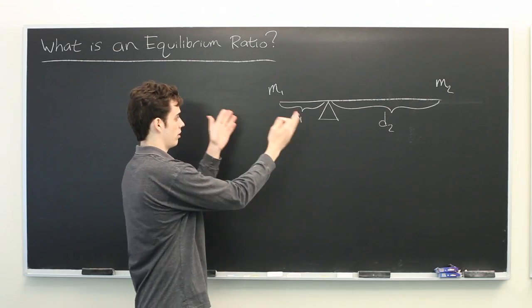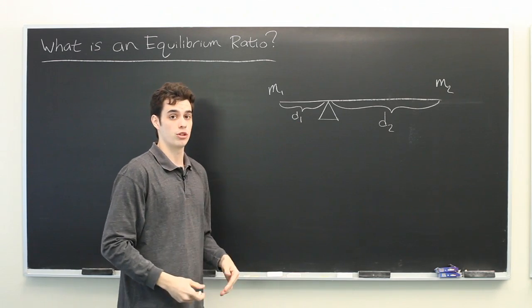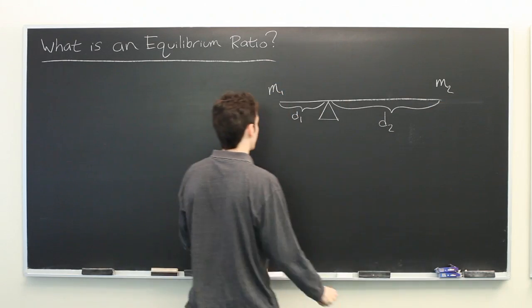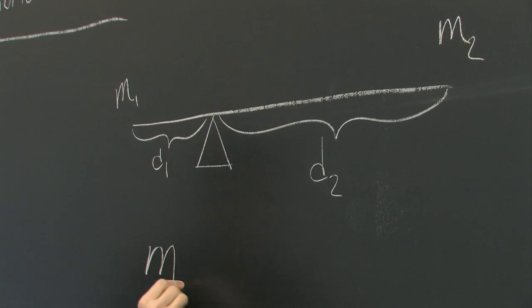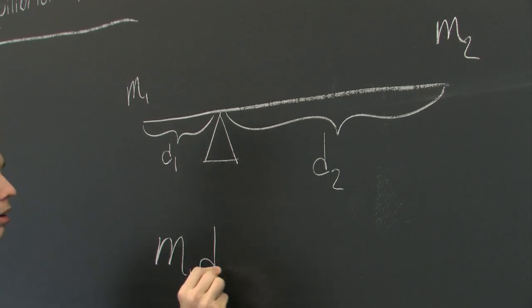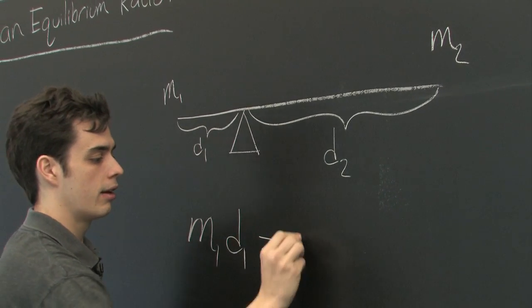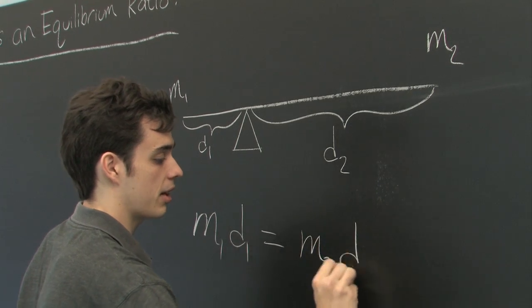Now, in order for the seesaw to be balanced and reach the equilibrium position of it being perfectly horizontal, it needs to be the case that the first mass times the first distance is equal to the second mass times the second distance.